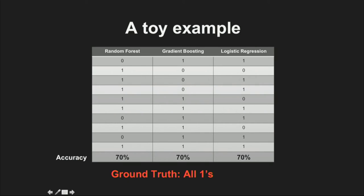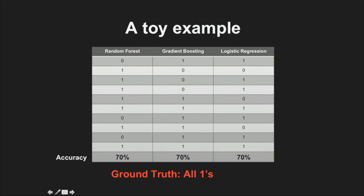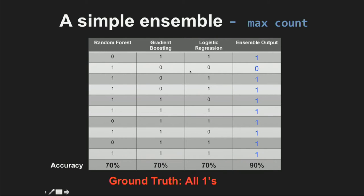How do we build a final prediction when all three models have equal performance? There's an easy way: combine the three models by taking the maximum count — voting. In the first row, 1 comes the most, so the output is 1. In the second row, 0 comes more, so the output is 0. Doing this, you miraculously get 90% accuracy. This is the simplest ensemble — maximum voting, which is also your average.